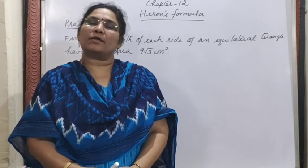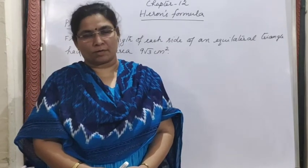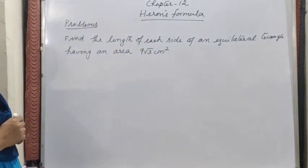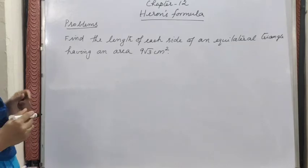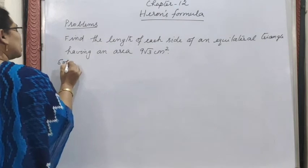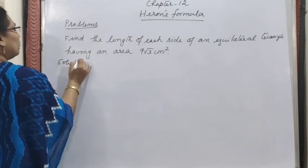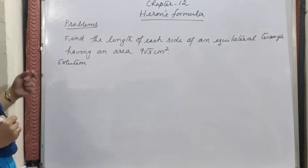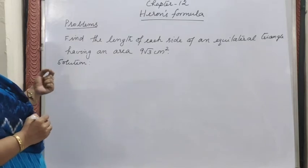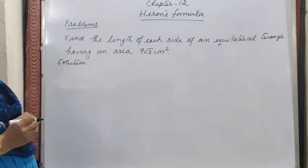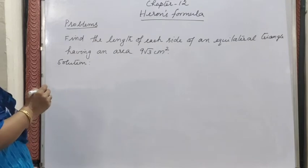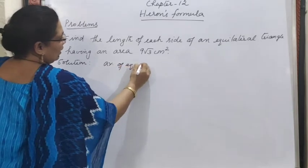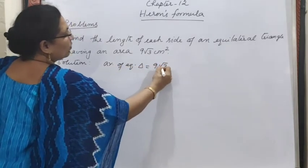Good morning children, once again we are continuing Heron's formula problems. Today's problem: find the length of each side of an equilateral triangle having an area of 9√3 cm². Yesterday, using Heron's formula, we learned the formula for the area of equilateral triangles. We will use that same concept to find the side of the equilateral triangle. Given: area of the equilateral triangle = 9√3.